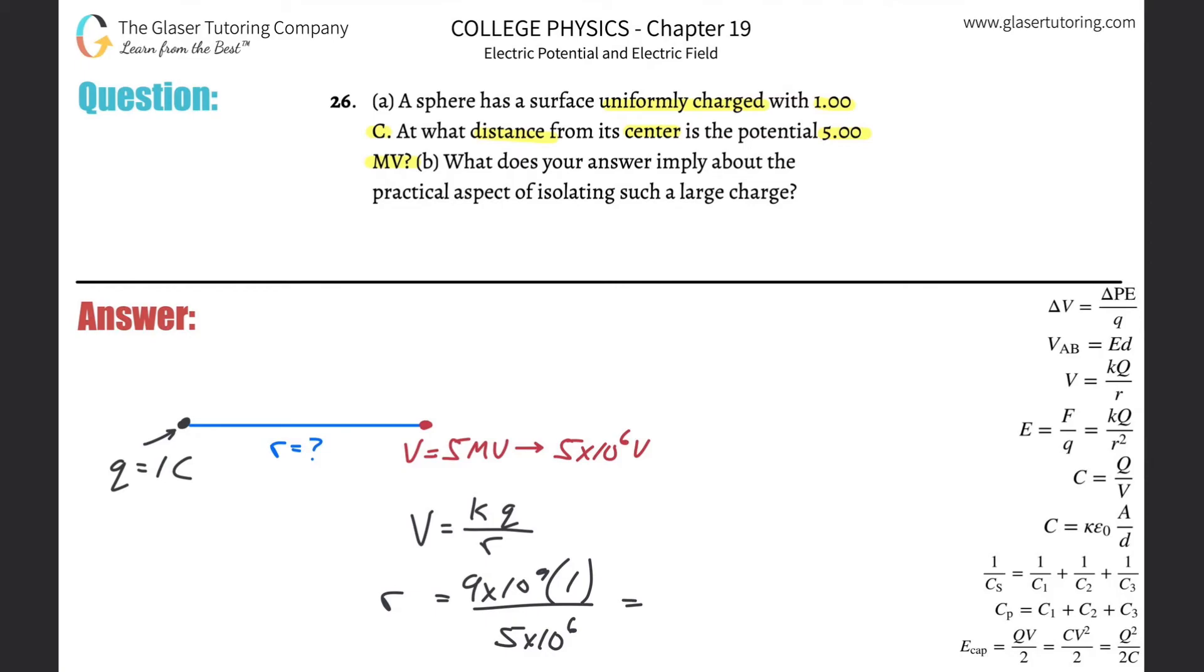So that's basically 9 times 10 to the ninth divided by 5 times 10 to the sixth. This works out to be 1800 meters. Okay. Part B: What does your answer imply about the practical aspect of isolating such a large charge?